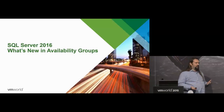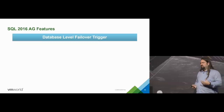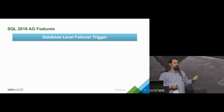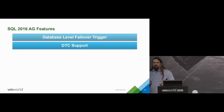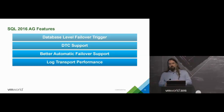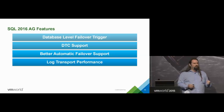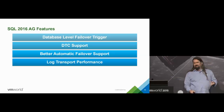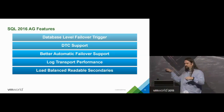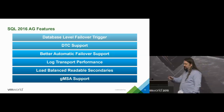SQL Server 2016 should be out in about five months. Microsoft has made a very large investment in making HA even better. We get database-level triggering of failures, support for distributed transactions, better automatic failover support, better log transport performance — targeting a 30% performance increase over today, and what they can do today can support 95-97% of workloads. We're also getting load balancing of readable secondaries and group-managed service accounts to make password changes a thing of the past.